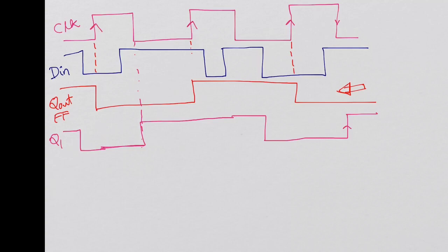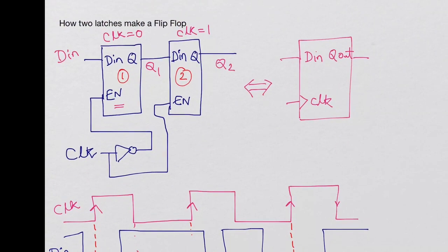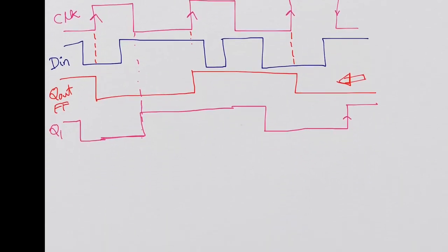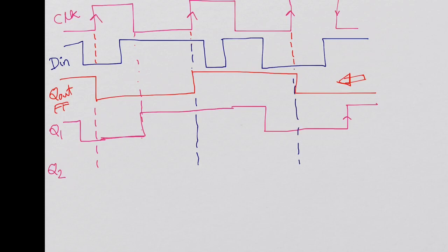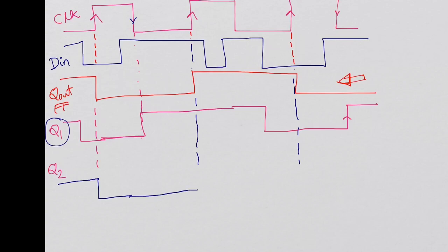Q1 is the input to the second latch, and the second latch is enabled when the clock is high. Let's plot Q2. For Q2, it is enabled when the clock goes high. Assume Q2 was high initially. At the first rising edge it sees a low on Q1 — its D input — and goes low. At the falling edge of the clock it is still low, so it remains low. At the next rising edge it sees a high and goes high. It stays high because Q1 is high.